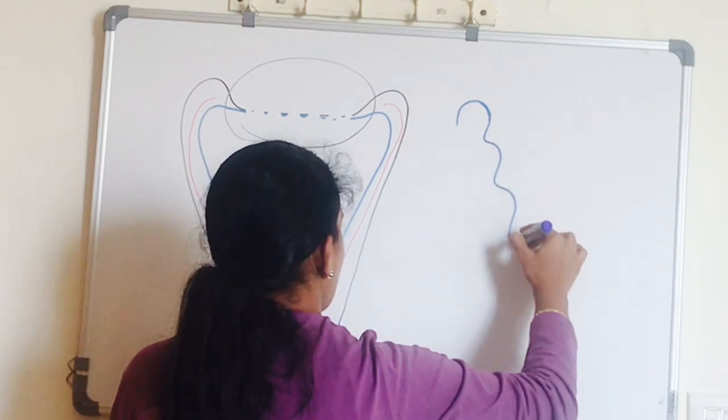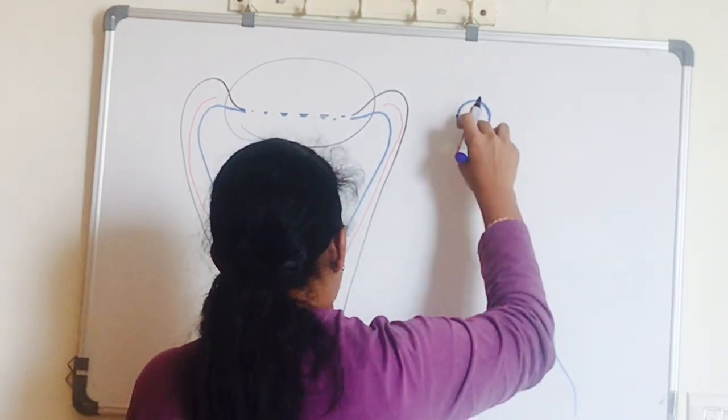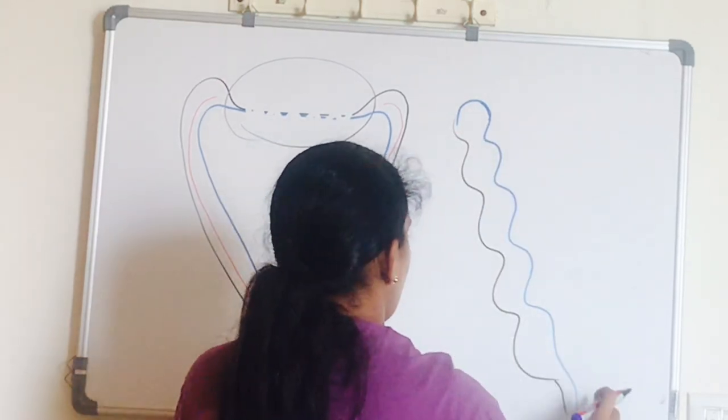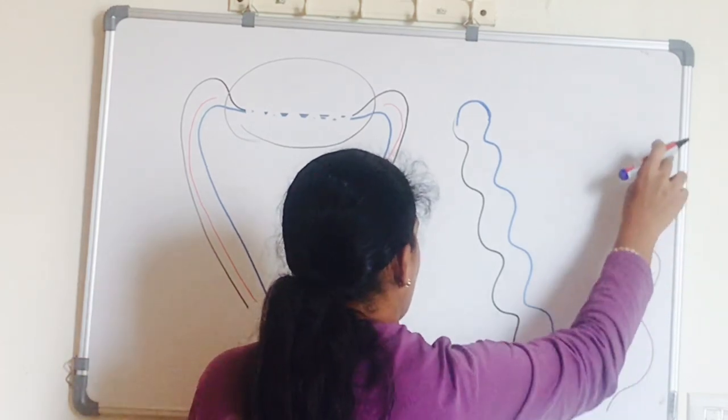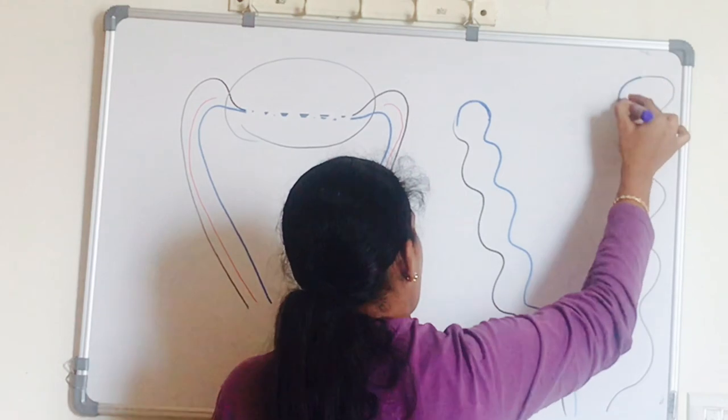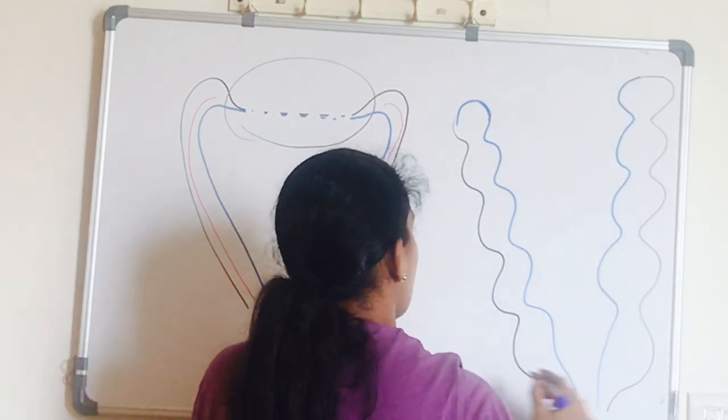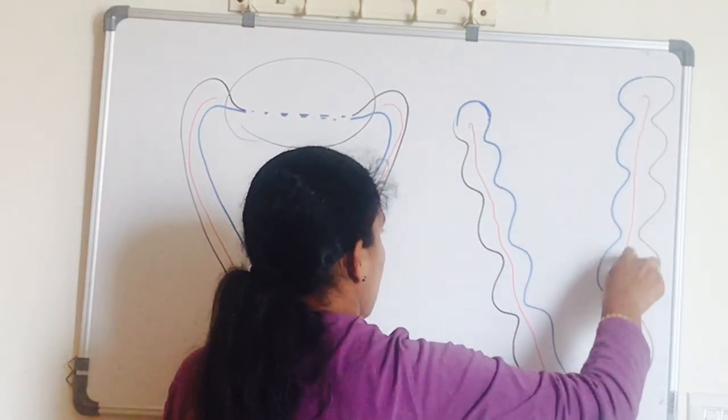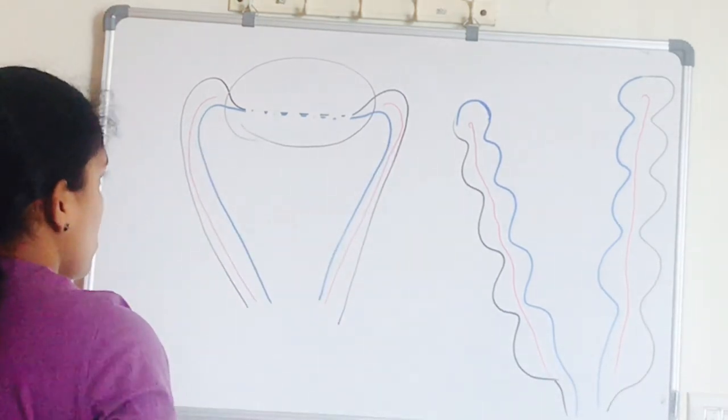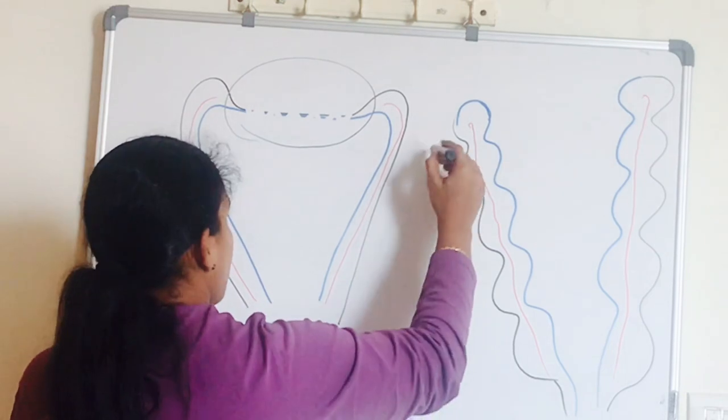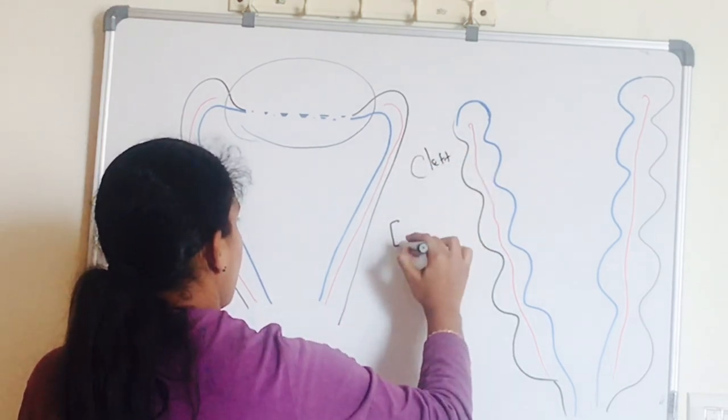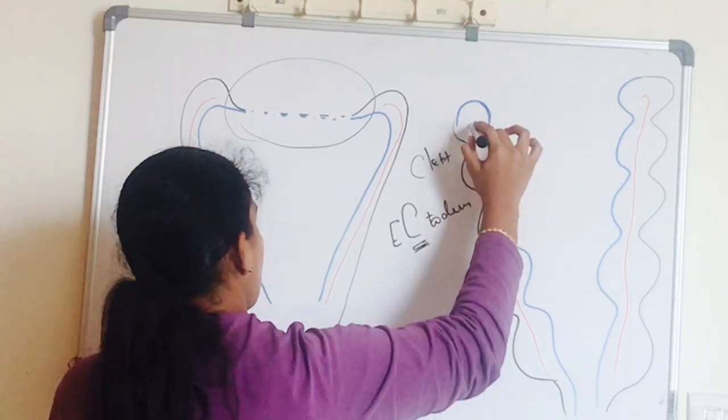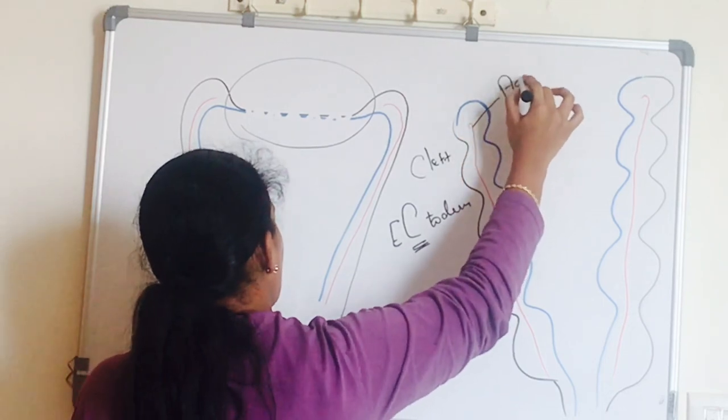So the mesoderm forms arches. Inner side endoderm forms pouches, which give rise to many important organs. And the surface ectoderm, this is in the region of neck which is marked on the outside by series of clefts or grooves called as ectodermal clefts. The first cleft persists to form our external auditory meatus, whereas the other clefts are obliterated. Let us talk about pharyngeal apparatus in detail in the next video.